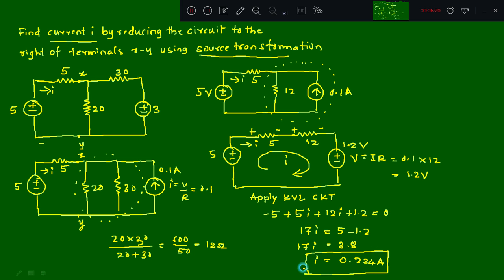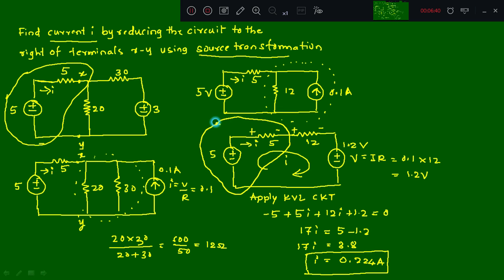To summarize this numerical using source transformation: the key point is that whichever factor they have asked about in the circuit, you should not touch that part till the end. Observe that this part of the circuit was not touched throughout the entire solution. Excluding that part, alter the remaining circuit using source transformation. The answer is i = 0.224 amperes, or equivalently 224 milliamps.